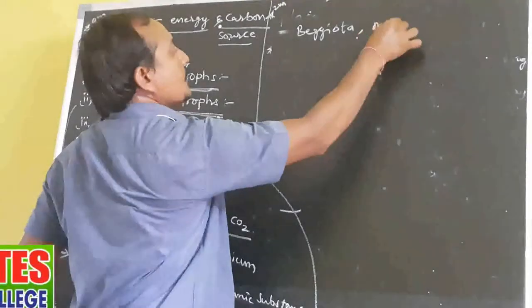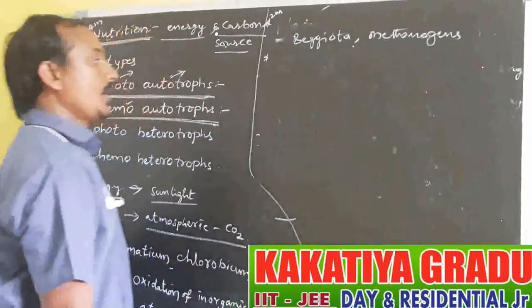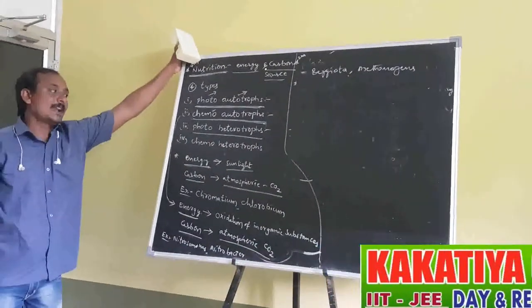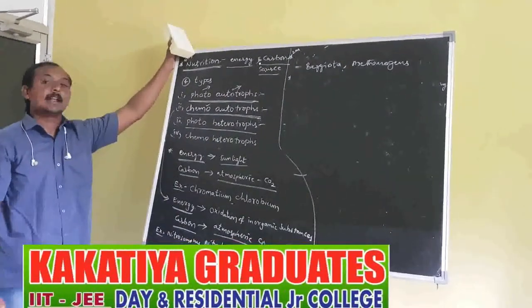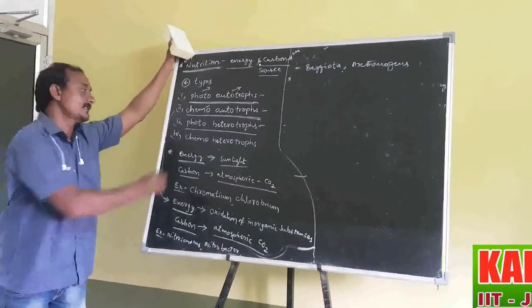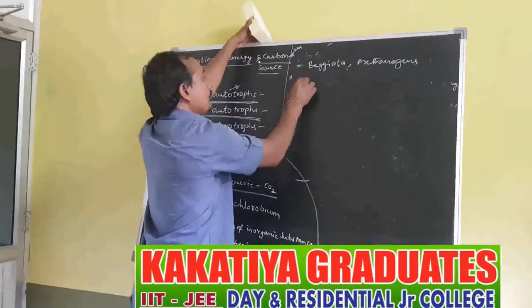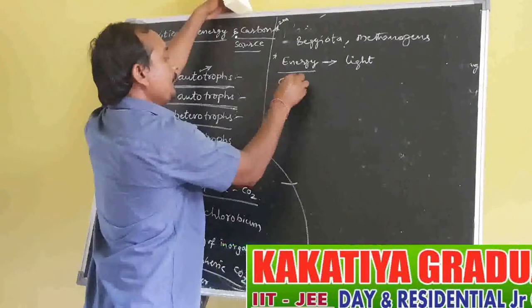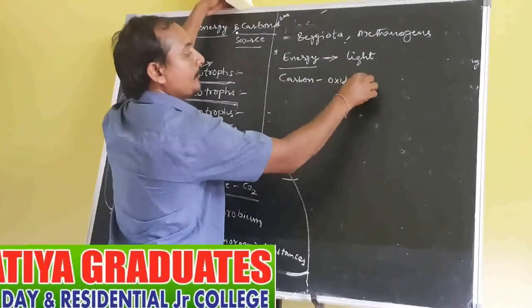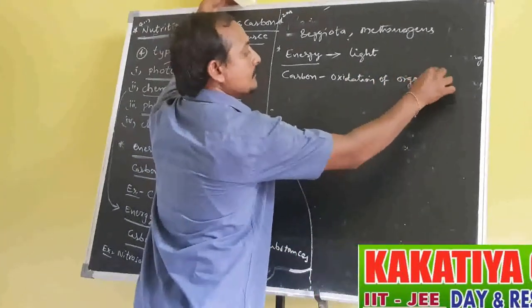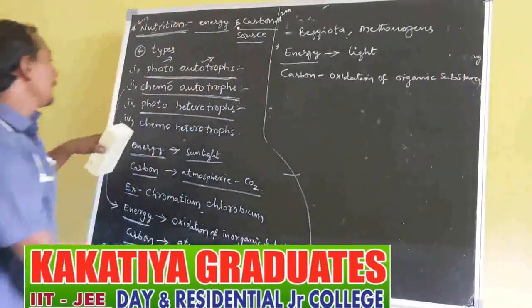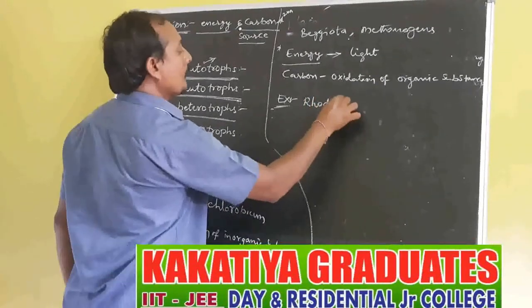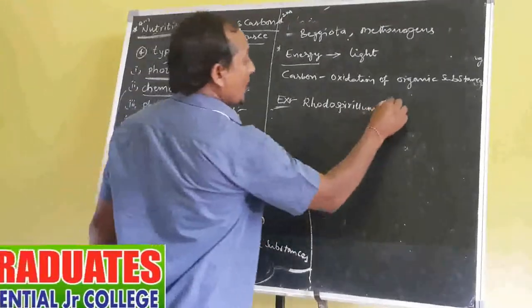The third type is Photo-heterotrophs. These bacteria obtain energy from sunlight, but carbon from the oxidation of organic substances. Such bacteria are called Photo-heterotrophs. Examples are Rhodospirillum and Rhodopseudomonas.